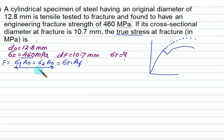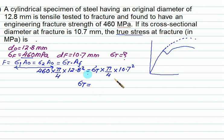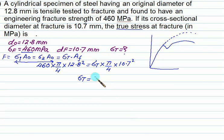The engineering fracture strength is 460 MPa. The initial area is (π/4) × 12.8². Using the relation: engineering stress × A₀ = true stress × A_f, that is: 460 × (π/4 × 12.8²) = σₜ × (π/4 × 10.7²). Solving this, and noting that true stress is always greater than engineering stress, the approximate answer is 658 MPa.